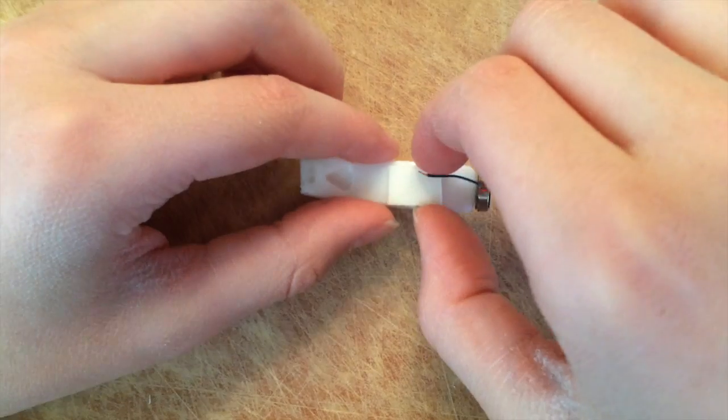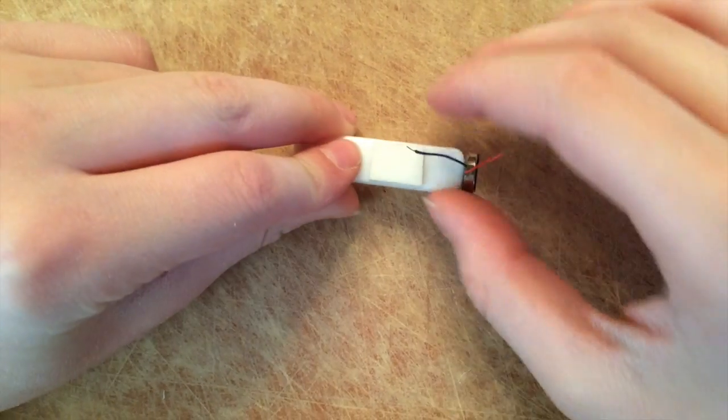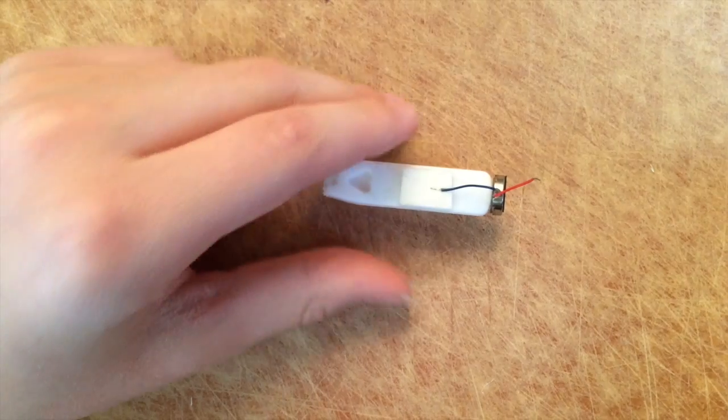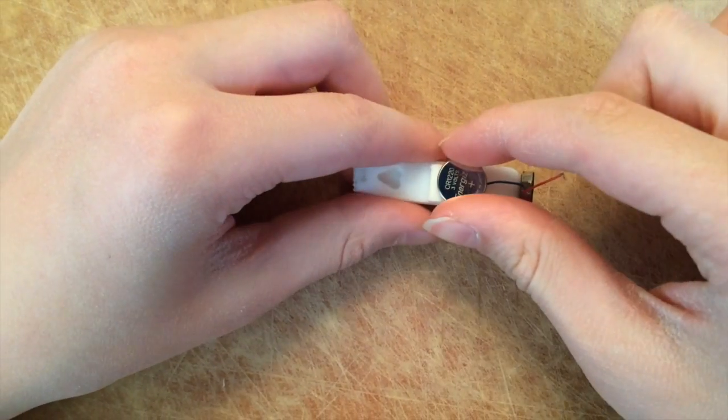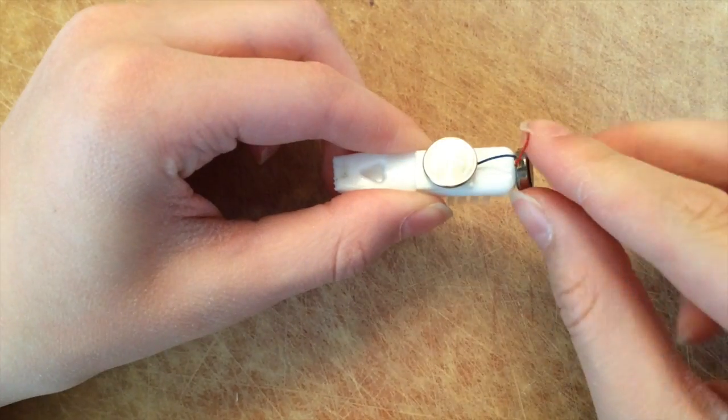Separate the two wires, put the sticky tape onto the toothbrush head, bring the blue wire down and stick it to the sticky tape, then take your button battery, place it on top, and move the red wire back.